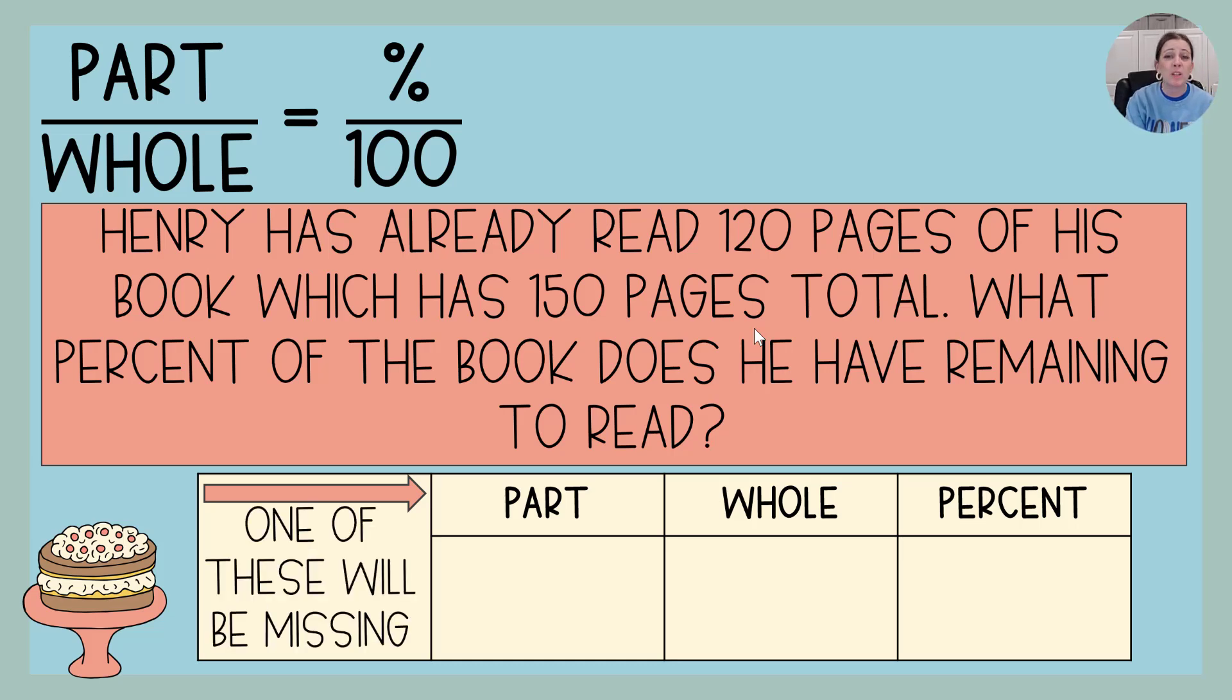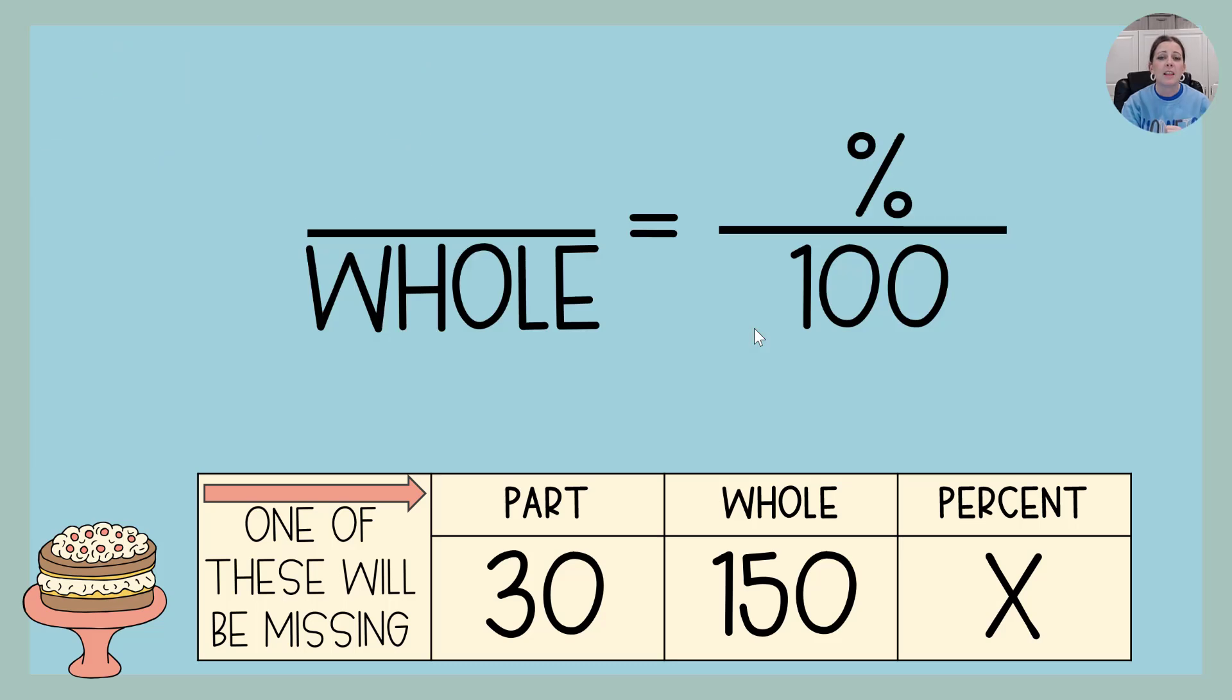It's not 120. 120 is how many he has already read. If the question is about how much does he have remaining, how much does he have left? So my part is 30. The whole, there's 150 pages in the book, and then percent is my missing piece. Let's go ahead and take it and fill in our pieces.